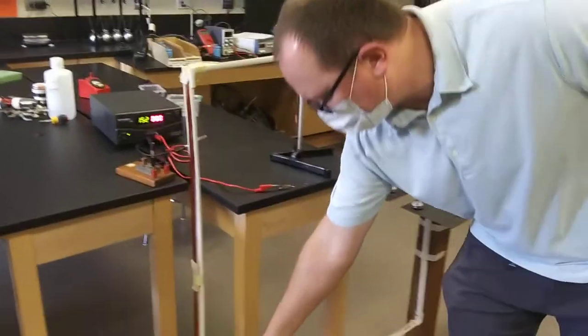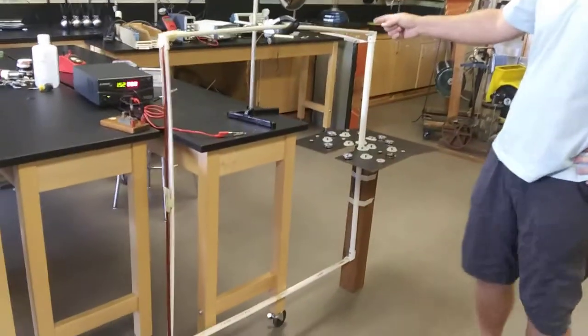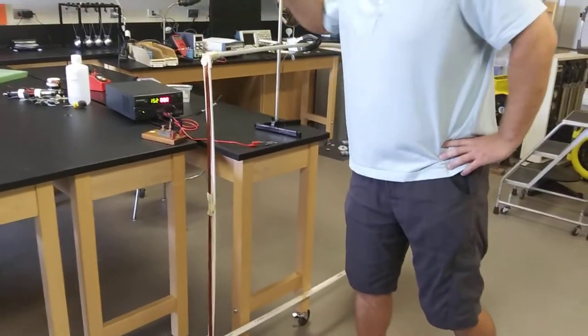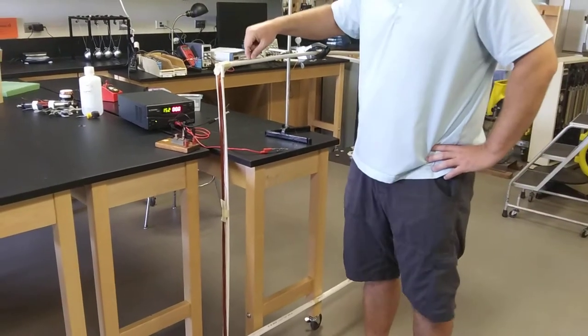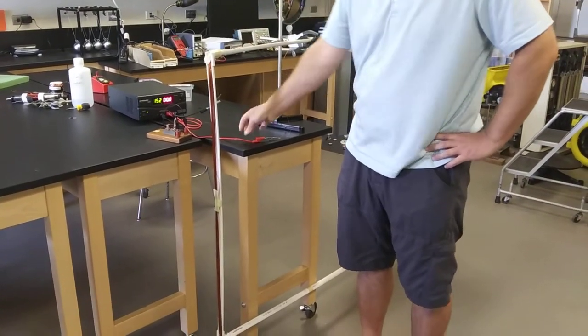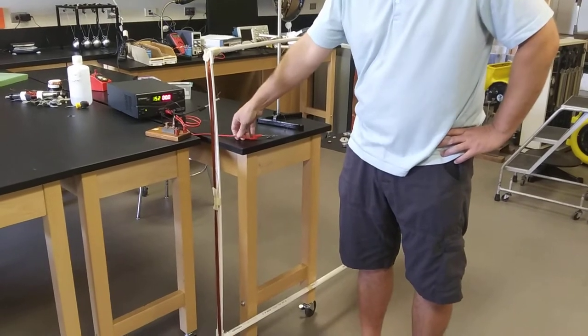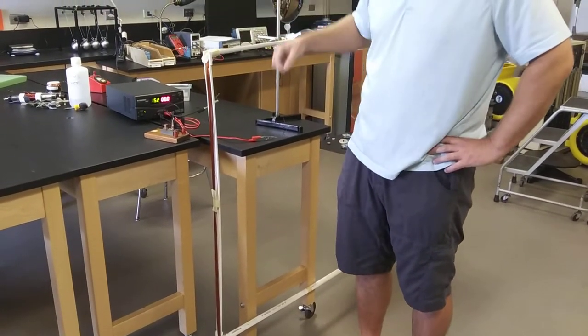this big square is wound with 44 turns of copper wire. Now this wire is enameled, so basically painted. This wire has plastic on it, this wire has paint on it, and that's what insulates it.